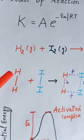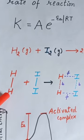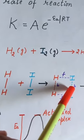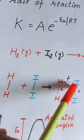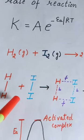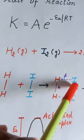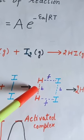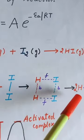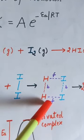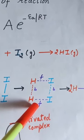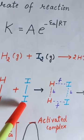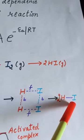What happens during a chemical reaction is that the bond between H and H in H₂ breaks. Similarly, the bond between I and I in I₂ breaks and a new bond between H and I is forming. So, reactant molecules first convert into an intermediate, also known as an activated complex. After that, this intermediate converts to the product. Since this activated complex is unstable, it converts into the product, which is Hydrogen Iodide (HI).